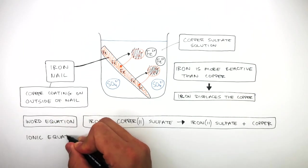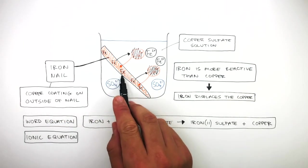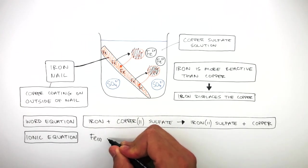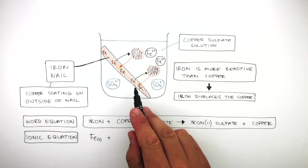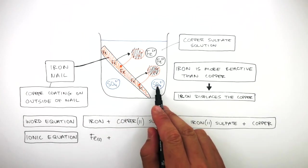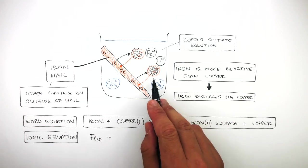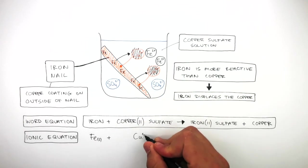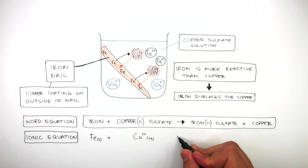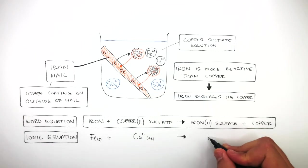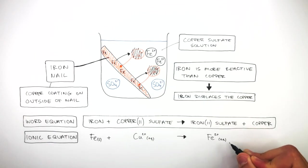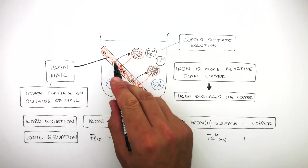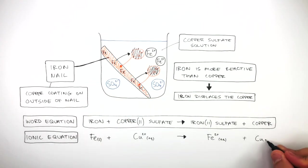For the ionic equation, we start with iron atoms in the iron nail, so we write Fe (s). The sulfate ions remain unchanged as spectator ions, so we ignore them. The copper 2+ ions are involved in the reaction, so we write Cu2+ (aq). They react to form Fe2+ (aq). There is now a copper coating on the outside of the iron nail, so we write Cu (s).